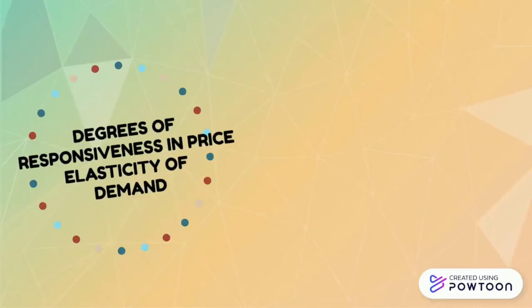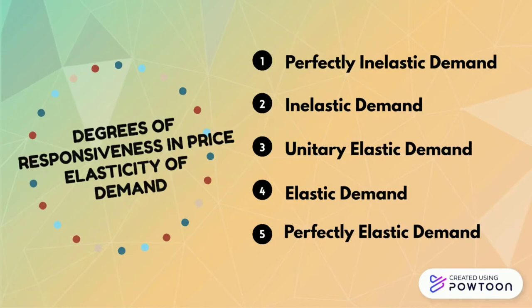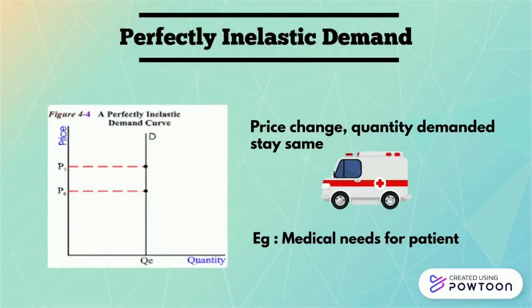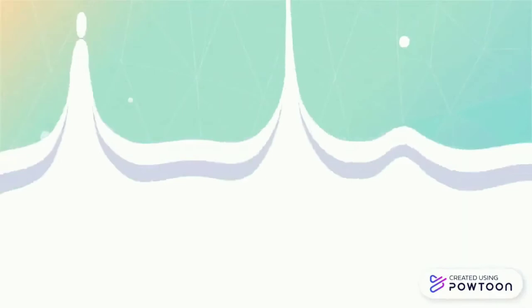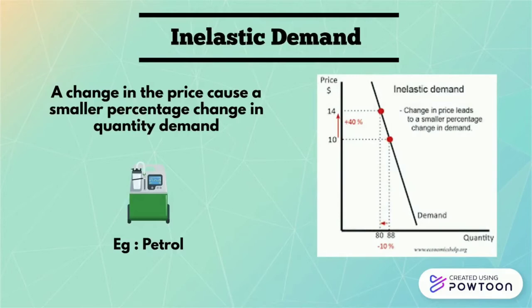There are five types of degrees of responsiveness in price elasticity of demand. For the first one, perfectly inelastic demand: price changes but quantity demanded stays the same, for example medical needs or patients. The next one is inelastic demand: a change in price causes a smaller percentage change in quantity demanded, for example petrol.